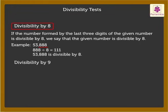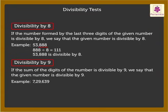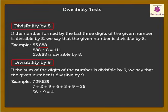Divisibility by 9: If the sum of the digits of the number is divisible by 9, we say that the given number is divisible by 9. For example, look at the number 7,29,639. On adding the digits 7, 2, 9, 6, 3 and 9, we get the sum as 36, which is divisible by 9. Thus, 7,29,639 is also divisible by 9.